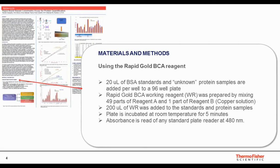This works just like the BCA assay. You pipette 20 microliters of BSA standards and your unknown protein samples to a 96-well plate. The Rapid Gold BCA working reagent is prepared by mixing 49 parts of reagent A and one part of reagent B, which is the copper solution. 200 microliters of working reagent is then added to the standards and protein samples. The plate is incubated at room temperature for 5 minutes and the absorbance is read in any standard plate reader at 480 nanometers.